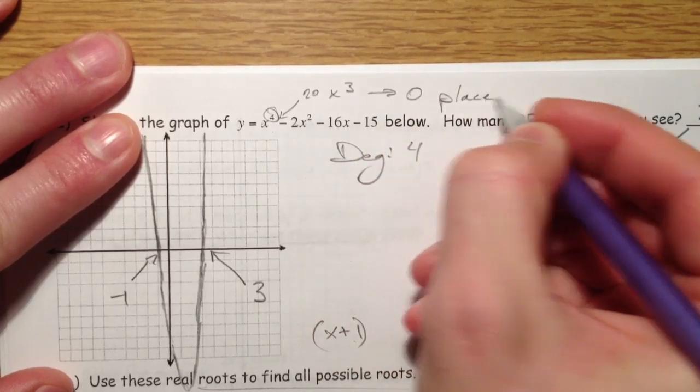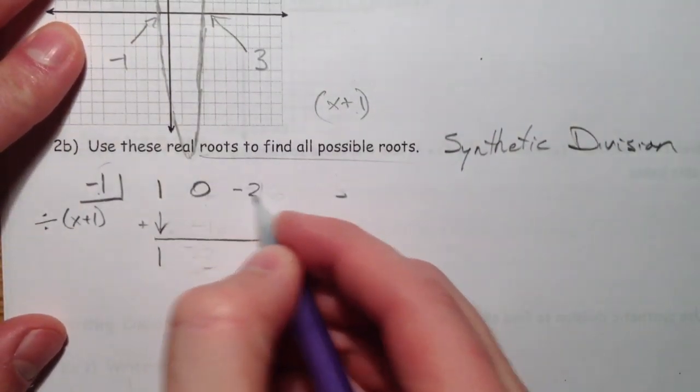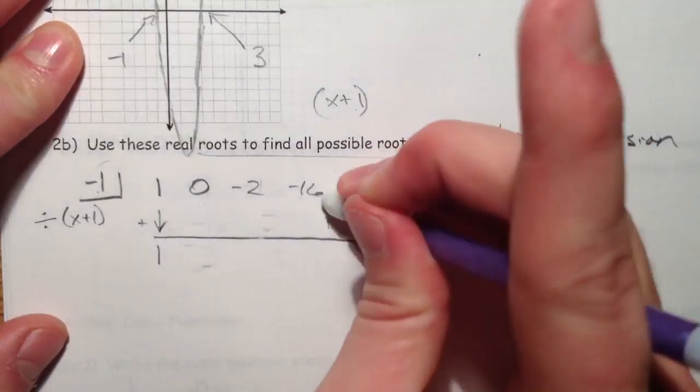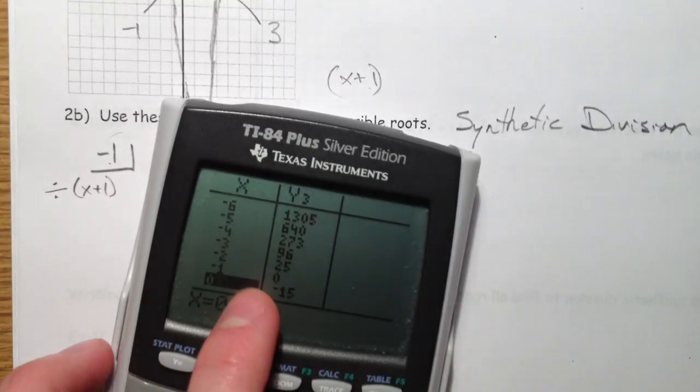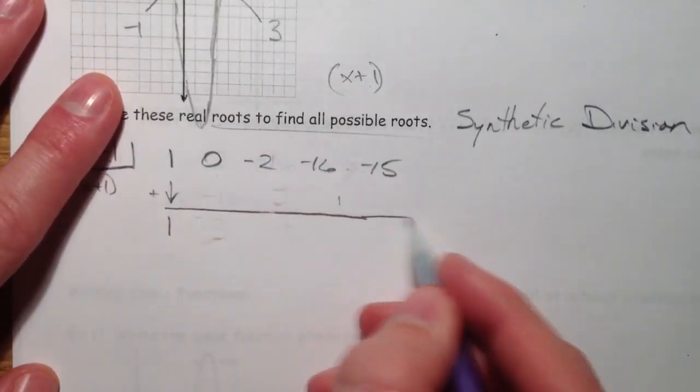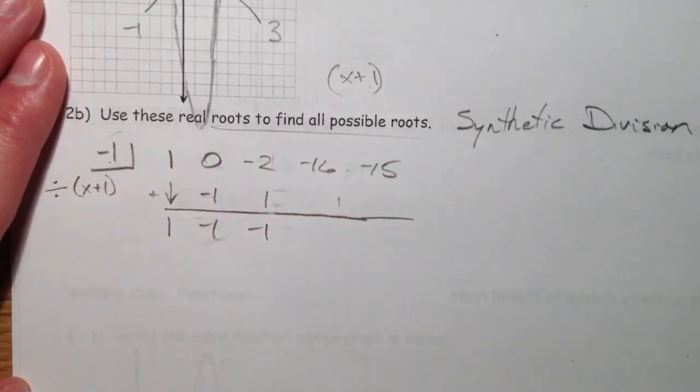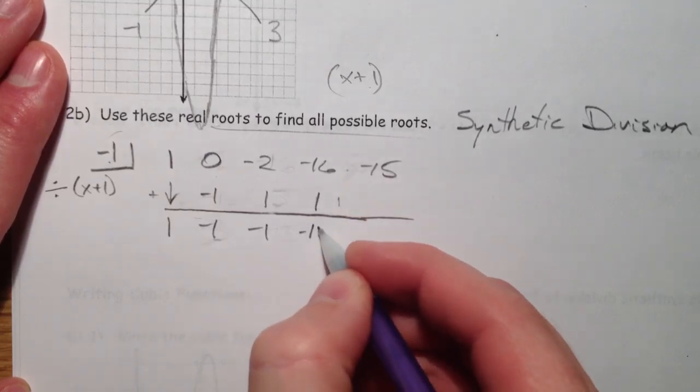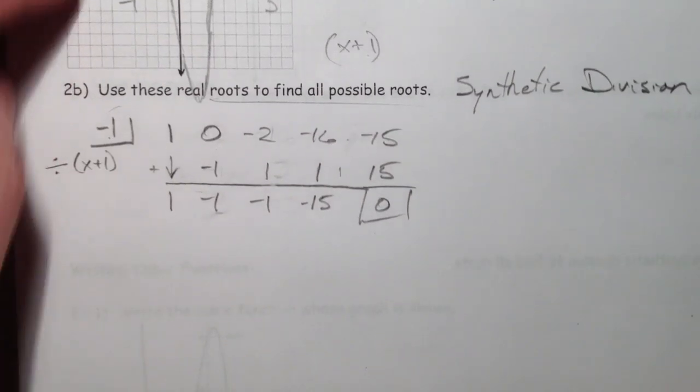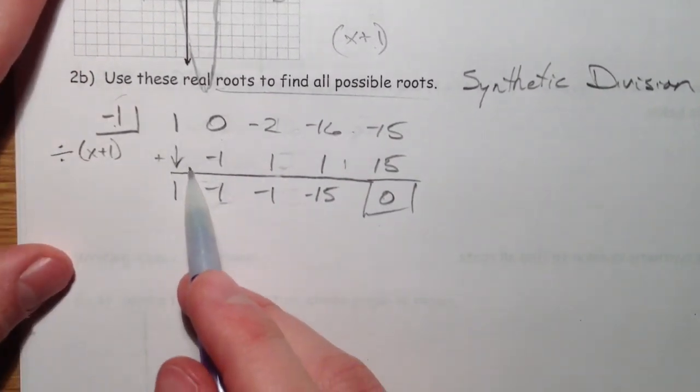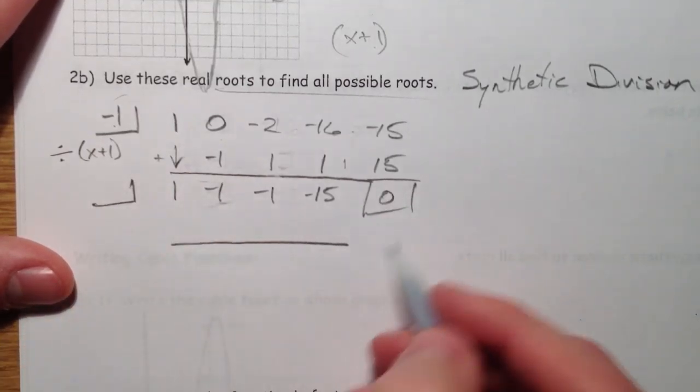We put a 0 in there. No cube term. We need a 0 placeholder. So, we have a 0, and then the negative 2, then the negative 16, then the negative 15. In other words, I knew I needed to get a 0, because when you plug in negative 1, you get 0. I knew I needed to get a remainder of 0. Negative 1. Positive 1. Negative 1. Positive 1. Negative 15. Positive 15. And you get 0. Voila. Alright. So, next part. We are going to continue synthetic division.